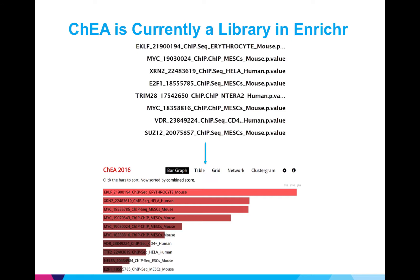The idea is that if a low p-value is computed between a transcription factor experiment and the input gene list, then the transcription factor targets are overrepresented in the input gene list and the transcription factor associated with the experiment likely regulated the gene expression of the input genes.